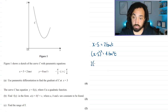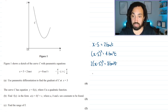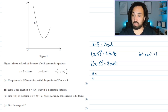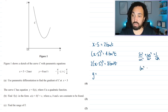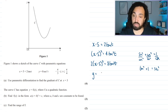Moving to y, we use the identity tan squared plus 1 equals sec squared. If you forget, you can derive it quickly: start from sin squared plus cos squared equals 1, then divide through by cos squared. Sin over cos is tan, giving tan squared; cos over cos is 1; and 1 over cos squared is sec squared. You can also divide by sin squared to get the identity between cot and cosec.